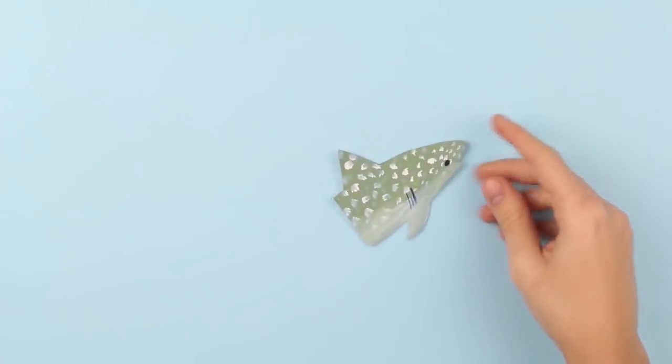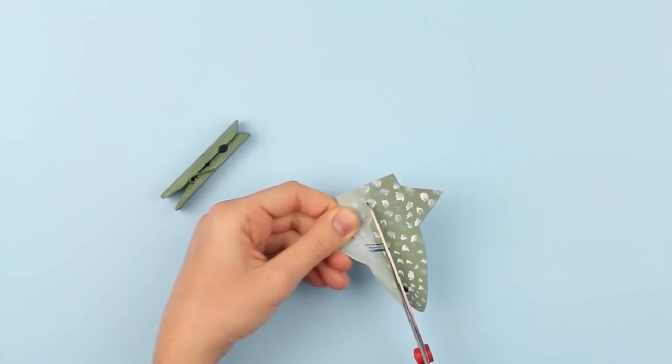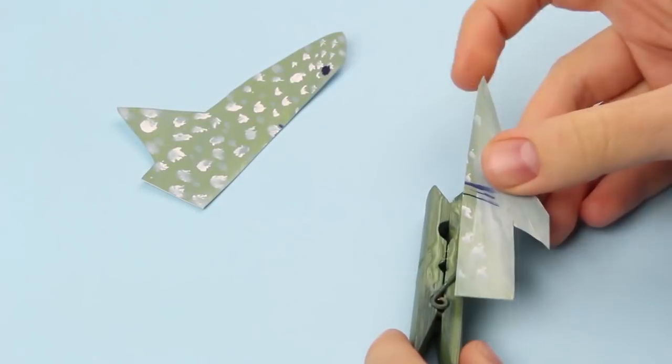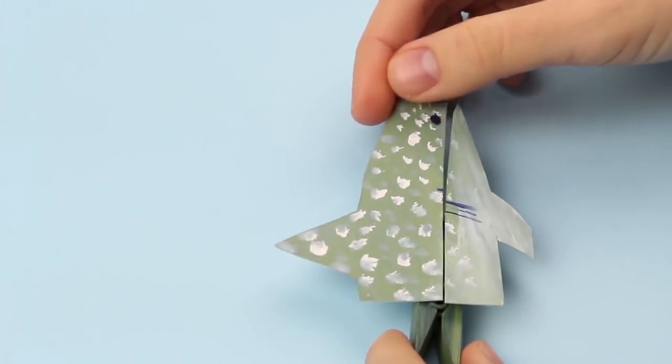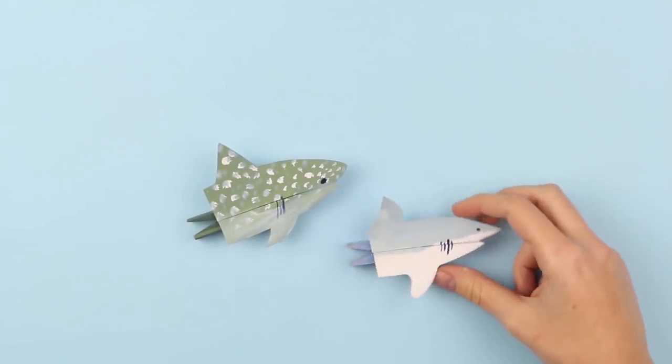Paint a wooden clothespin in the same color. Cut out the shark across the length. Add some multipurpose glue to the pin. Attach each shark part to the different pin half. Make one more shark of another shade.